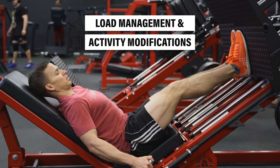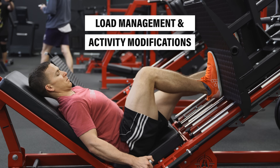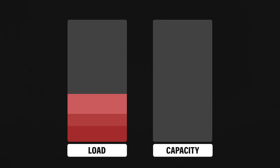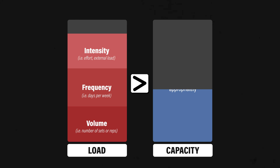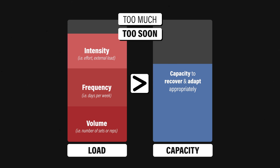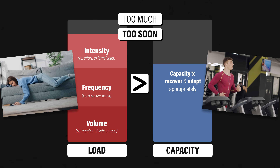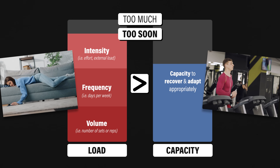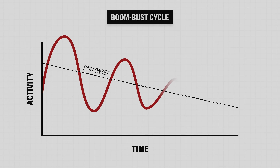Before outlining the exercises, it's important to discuss load management and activity modifications. Quadriceps tendinopathy is thought to occur when the intensity, frequency, and volume of quadriceps tendon loading exceeds your capacity to recover and adapt appropriately — it often comes down to doing too much, too soon. Let's tie the goals of rehab, pain monitoring, and load management together by reviewing the boom-bust cycle.